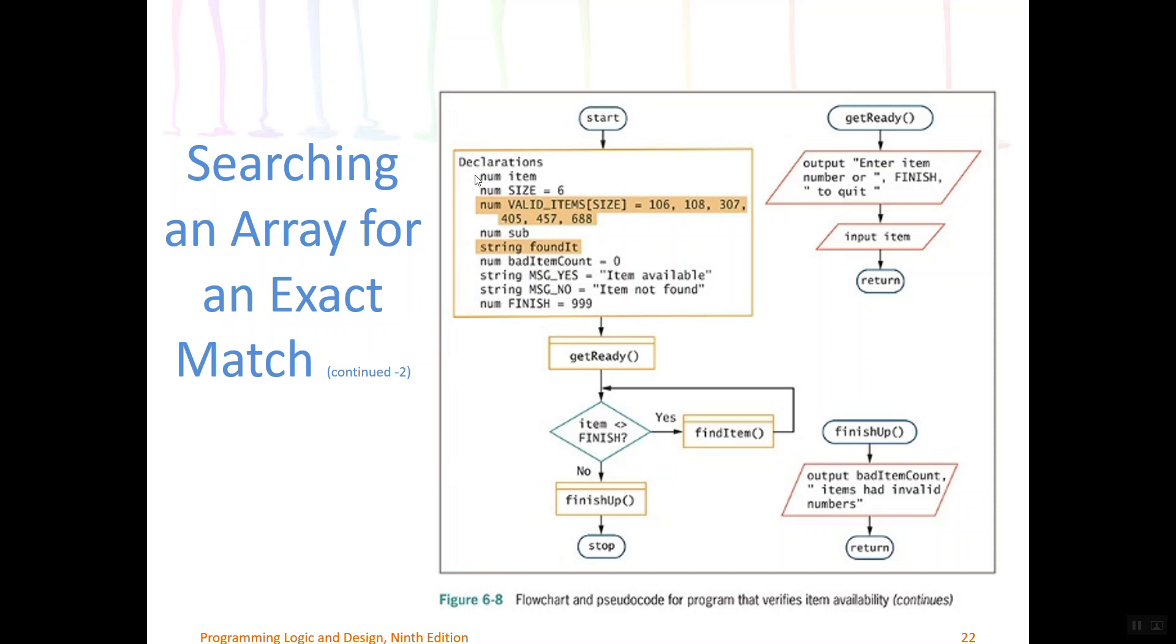So let's take a look at some of these other variables. NumItem is going to be used to store the item number provided by the user. Size reflects the size of the array. ValidItems is an array of numeric constants of size 6. And this array is declared but also initialized in one step. It sets the values in the array: 106, 108, 307, and so forth. These are valid item numbers. And this is what we're going to use to compare against the user's input when they type in an item that they'd like to order. Sub is used as our subscript value when we're looping.